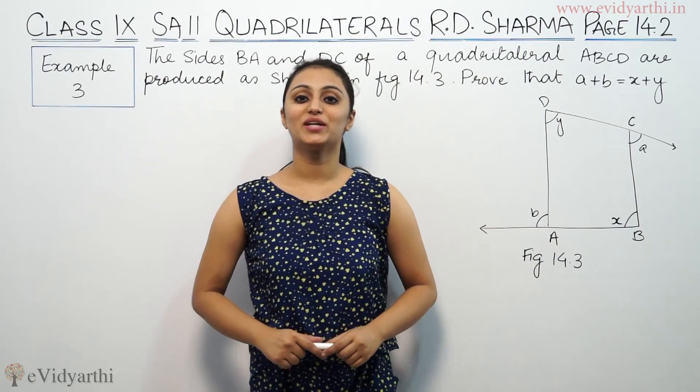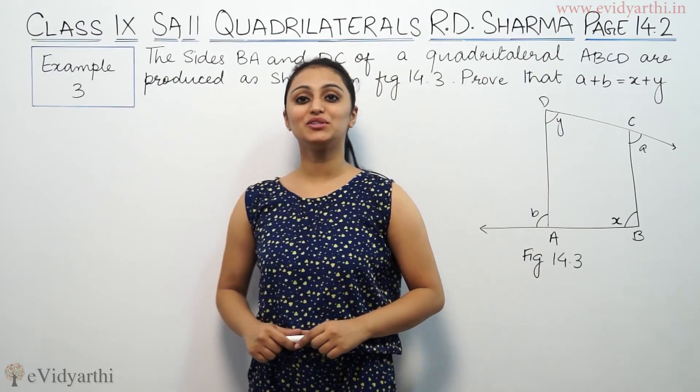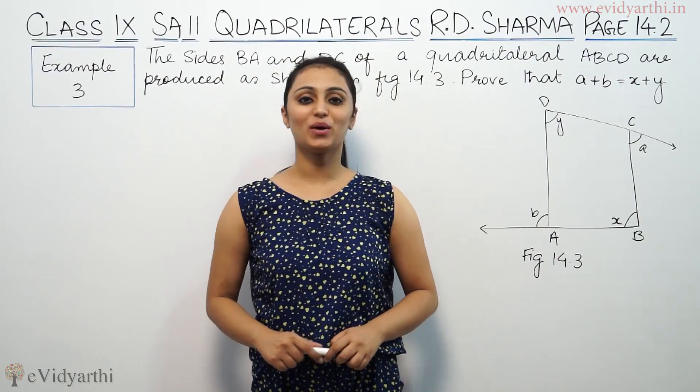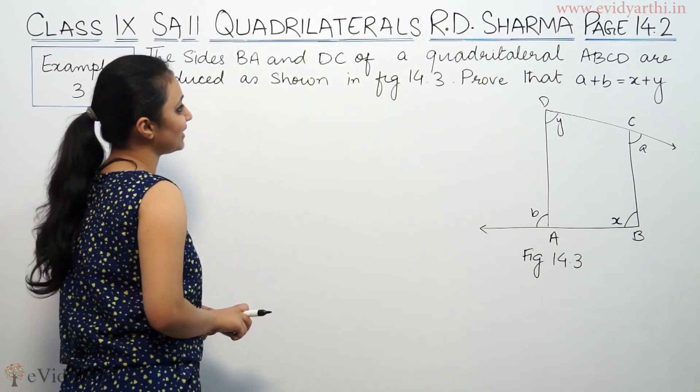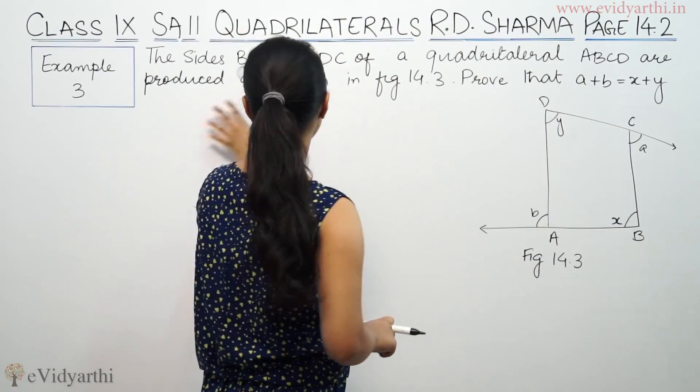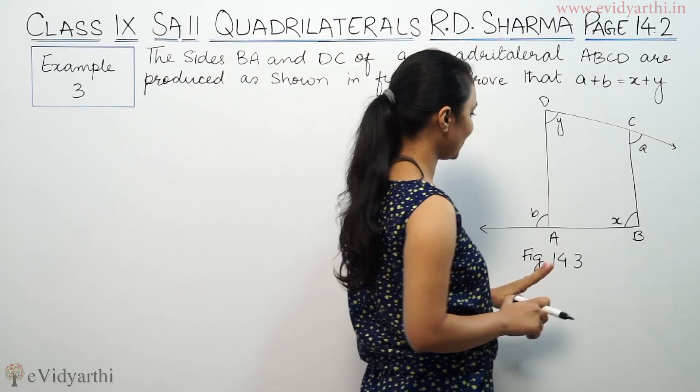Hi, this is Khushku with another question of quadrilateral system, example number 3 from page number 14.2 of R.D. Sharma, which says besides BA and DC of a quadrilateral ABCD are produced as shown in figure 14.3.